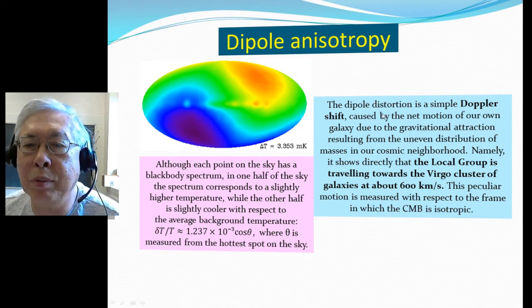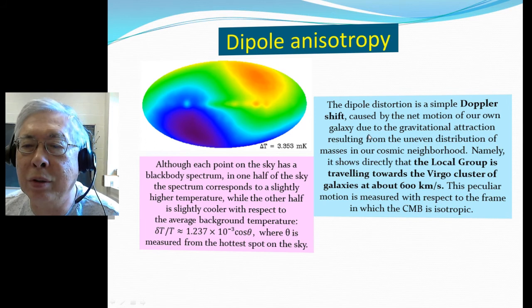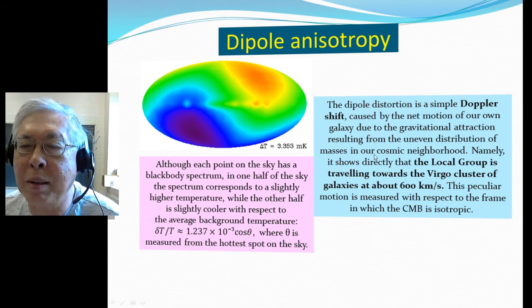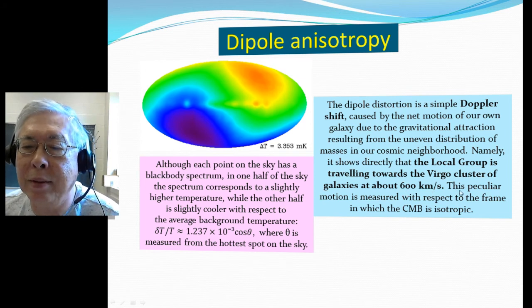So this dipole distortion is simply the Doppler shift caused by the net motion of our own galaxy due to gravitational attraction resulting from the uneven distribution of masses in our cosmic neighborhood. Namely, it shows directly that the local group is traveling towards the Virgo cluster of galaxies at about 600 km per second. This peculiar motion is measured with respect to the frame in which the CMB is isotropic.